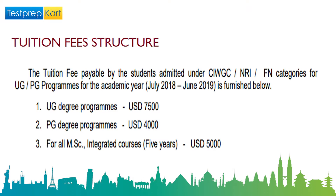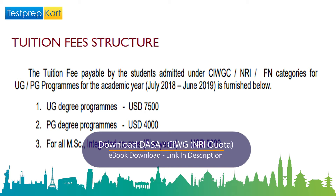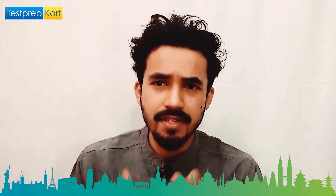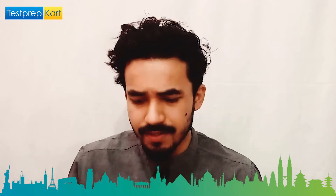Briefly discussing the tuition fee structure for UG, PG, and all integrated master's courses: the fee information is from 2018–2019 but remains the same for the current year. For the UG bachelor's program, the fee is USD 7,500. For the PG degree program, the fee is USD 4,000. For all integrated five-year master's courses, the fee is USD 5,000.